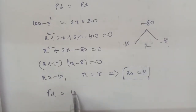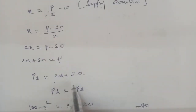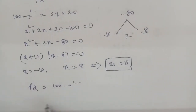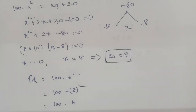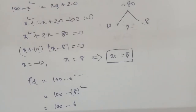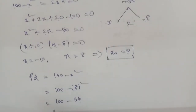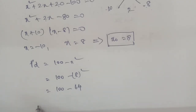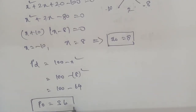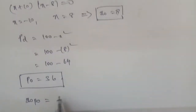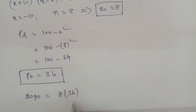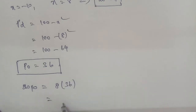Now finding p0: Pd equals 100 minus X squared. Substituting X equals 8: 100 minus 8 squared equals 100 minus 64 equals 36. So p0 equals 36. Therefore x0 equals 8 and p0 equals 36, giving x0 into p0 equals 8 into 36 equals 288.